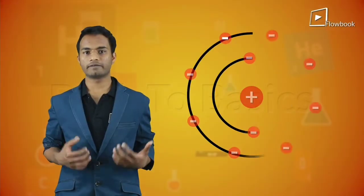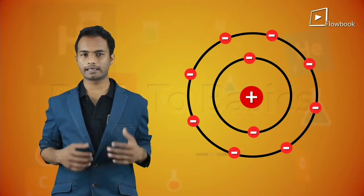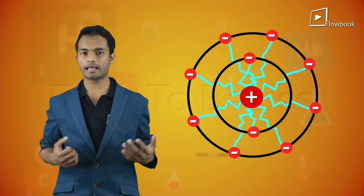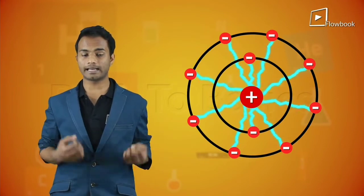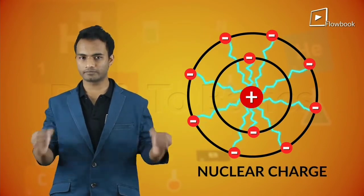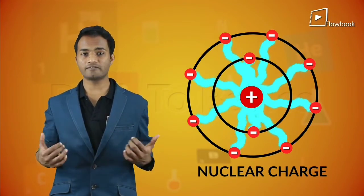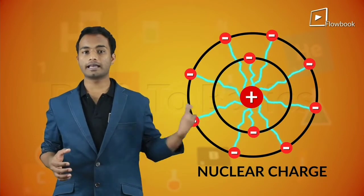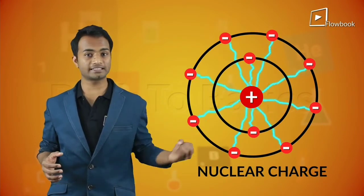We know that electrons are negatively charged particles and they're attracted to the nucleus, which is positively charged. The strength with which they're attracted to the nucleus is its nuclear charge. If this nuclear charge is higher, then it is harder for us to remove the electron from the atom. So, higher the nuclear charge, higher the ionization energy.